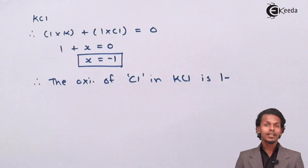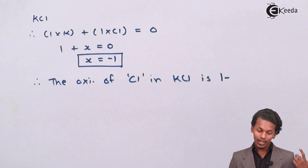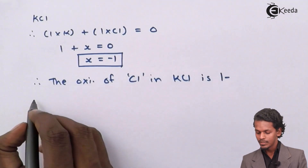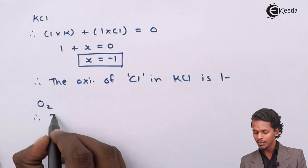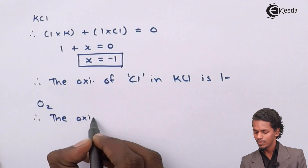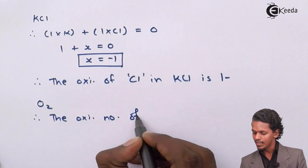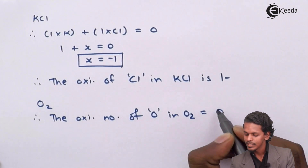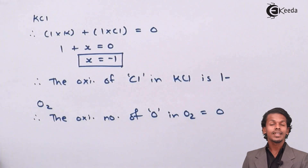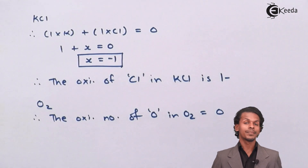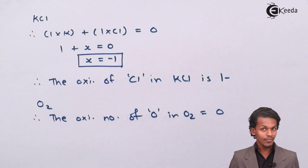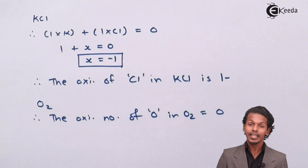Now let us compare the oxidation numbers. We can also determine the oxidation number of the second product, O₂. Since oxygen is in molecular form, the oxidation number of the oxygen atom in O₂ is zero. Let us now compare the reactant and product oxidation numbers to identify what type of redox change is occurring.